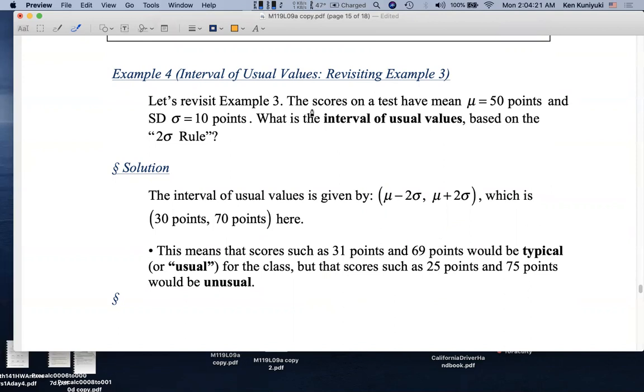Let's revisit example 3. Again, the scores on a test have mean, population mean mu, that is 50 points, and population standard deviation sigma, that is 10 points. So then what would be the interval of usual values based on the 2sigma or 2sd rule?